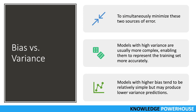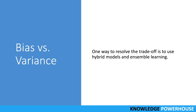It is typically impossible to do both simultaneously, but we try different techniques. Models with high variance are usually more complex — they can represent training data more accurately but will not perform as well on test data. Models with higher bias are relatively simple but their predictions may not be accurate. One way to resolve this trade-off is to use hybrid models or ensemble learning. For example, boosting combines many weak high-bias models in an ensemble, resulting in lower bias than the individual models, giving better final results.